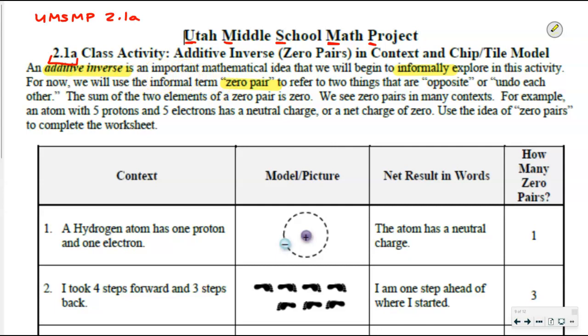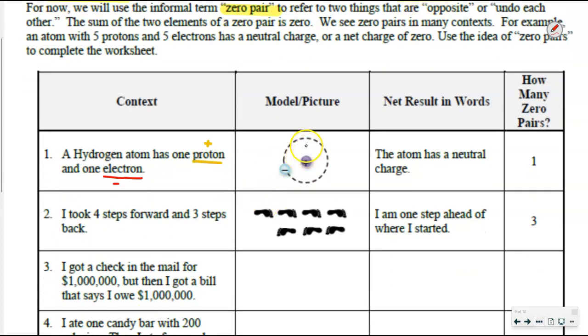The first example that we see is in an atom in science class. Are you guys familiar with atoms? In this one, number one, it says a hydrogen atom has one proton and one electron. You might remember that protons have a positive charge and electrons have a negative charge. We've got our proton in the nucleus. We have our electron in the electron cloud. But what happens when I have a proton and an electron together? Zero pair. How many zero pairs? One. So what is the net result? This says the atom has a neutral charge. Mathematically speaking, we might say it has a charge of zero.